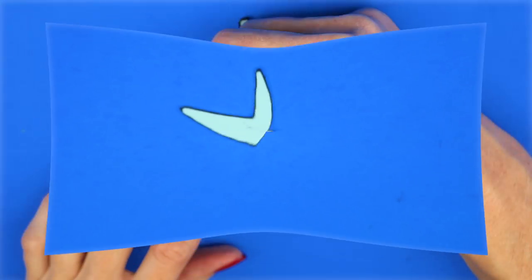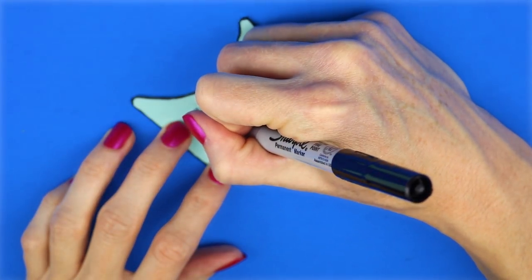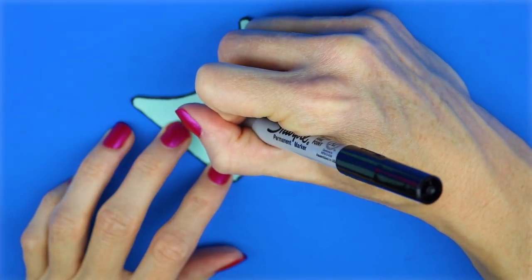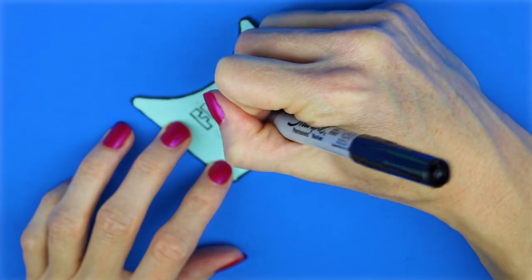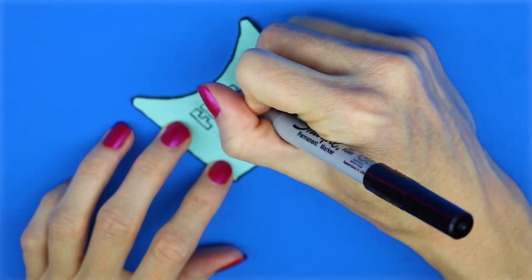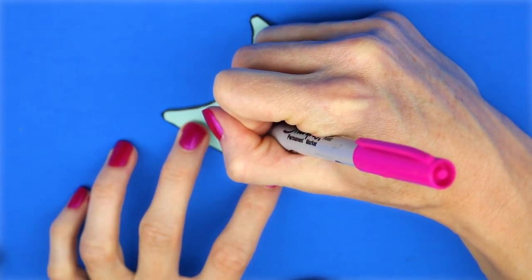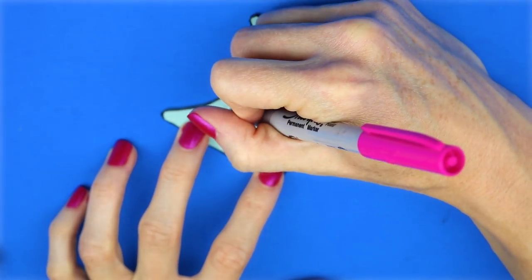And you can't see it real clearly, but all of the letters transferred onto the foam. Now I'm going to use a fine point Sharpie and I'm going to go over all of the letters. I'm going to use a pink Sharpie to color in the letters.